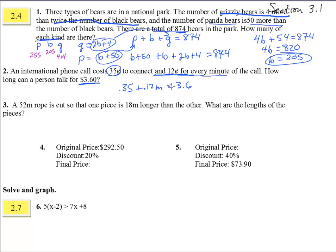35 cents plus 12 cents for every minute equals 360. So subtract 0.35 from both sides, and we get 3.25, and then when we divide by 0.12, we get 27.08 minutes, but we get charged by the minute. So 27 minutes is the maximum she can talk.